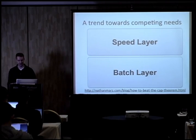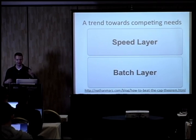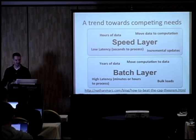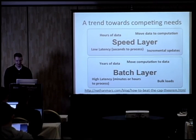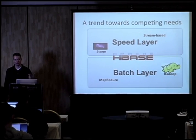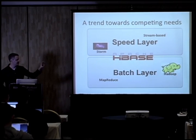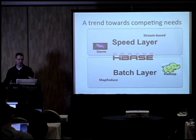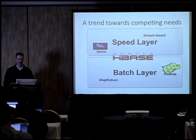I'm borrowing terminology that Marz uses: the speed layer and the batch layer — at other times the real-time layer and batch layer. The speed layer deals with hours of data, moves data to the computation, and is very low latency. The batch layer deals with many years of data and can do bulk loads. We're using Twitter's Storm technology to do our incremental stream-based processing, and Hadoop and MapReduce for batch processing. Apache HBase straddles the middle — you can run MapReduce jobs directly against HBase and get data locality, but you can also do incremental updates, inserts, and random reads and writes.